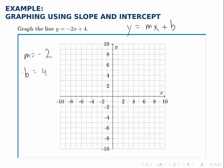So the slope is negative 2 and the intercept is 4. The intercept being 4 means that the line crosses the y-axis at 4, so we have one point there.